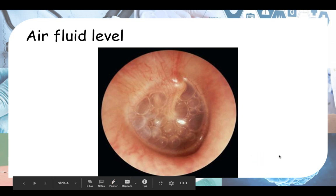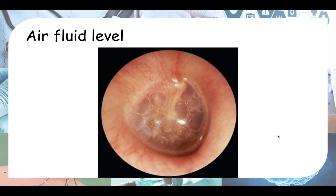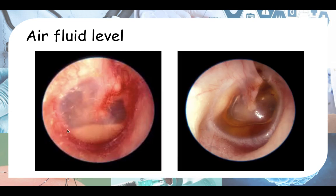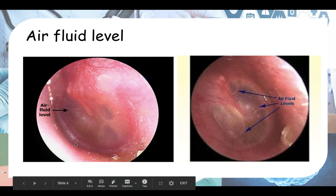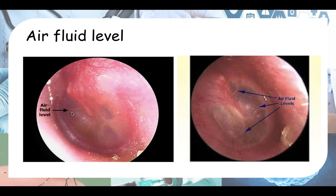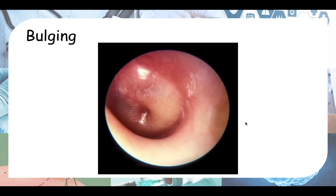Next, we'll be talking about the air fluid level. Sometimes it is very obvious — like in this picture you can see bubbles inside. Sometimes you see a purulent air fluid level, and sometimes it's a clear serous air fluid level. But most of the time you don't see it so clearly, so you have to look carefully at the eardrum. Here you can see one air fluid level, and over here you can see a few air fluid levels, but they're not that obvious.